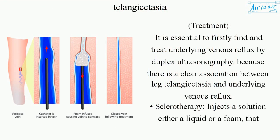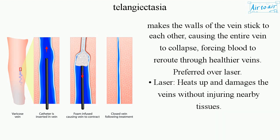Treatment: It is essential to firstly find and treat underlying venous reflux by duplex ultrasonography, because there is a clear association between leg telangiectasia and underlying venous reflux. Sclerotherapy injects a solution — either liquid or foam — that makes the walls of the veins stick to each other, causing the entire vein to collapse, forcing blood to reroute through healthier veins. Preferred over laser.